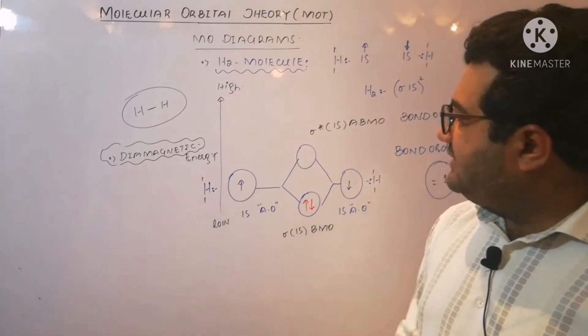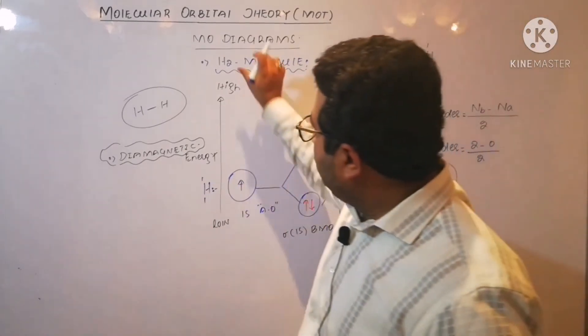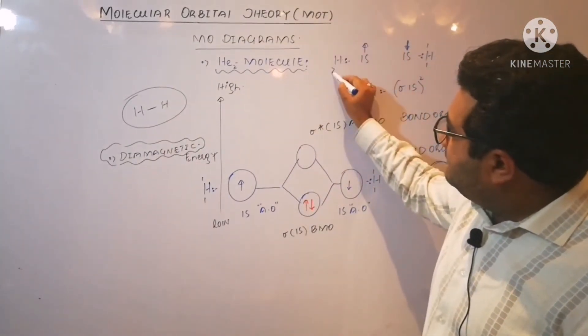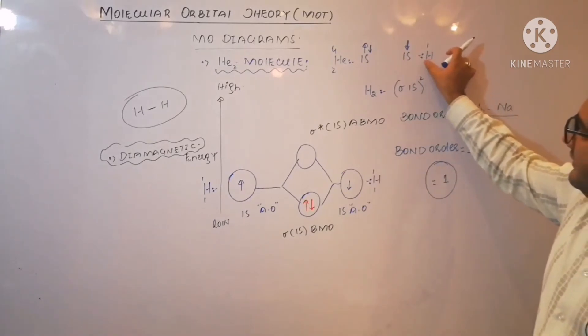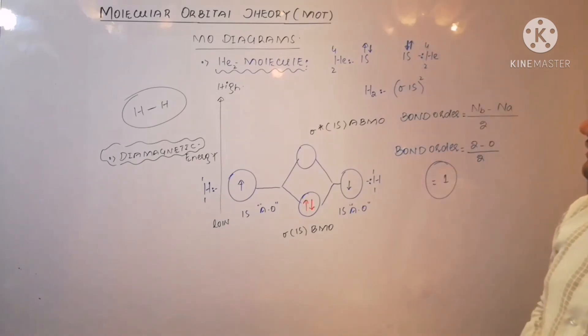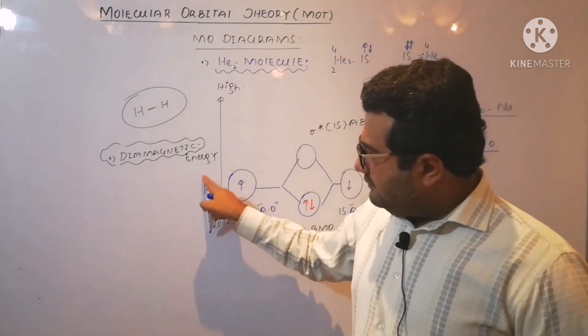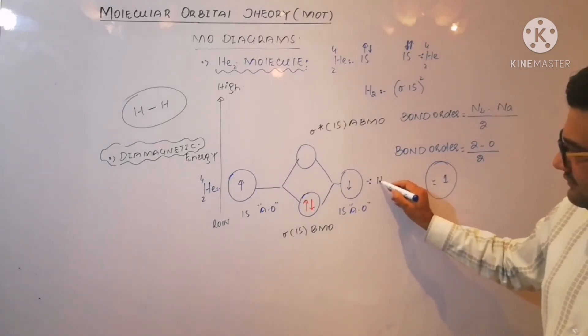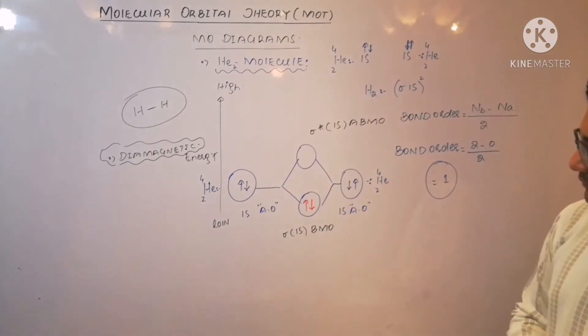Now let us discuss another very simple molecule. Now instead of hydrogen, let us talk about helium He2. And you know the helium is 2He4. So its electronic configuration should be 1s2. Similarly, the other helium atom is also 2He4, and its electronic configuration will be 1s2. Here we will also say that it is helium 2He4, and this atom is also helium 2He4. Here is a pair of electrons, and here is also a pair of electrons.